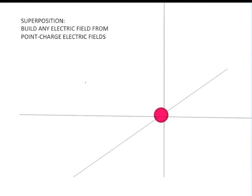Superposition is an important property of electric fields. Superposition means the fields add together, they combine by vector addition.